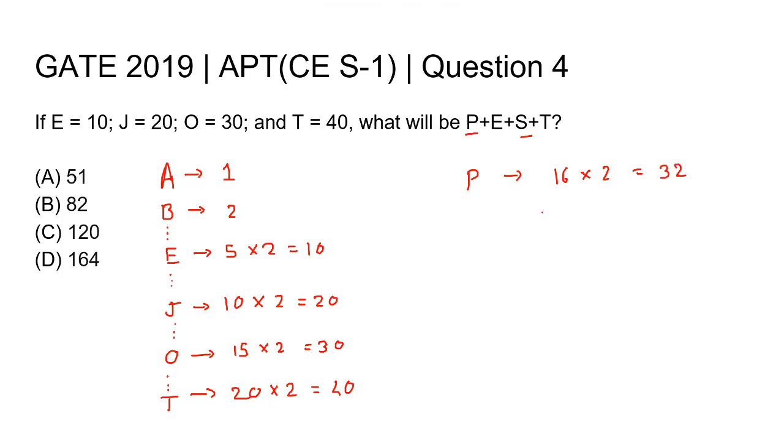Similarly, S is the nineteenth letter of the alphabet, so the number associated with it will be 19 times 2, that is 38. Now we have the values associated with P, E, S, and T, all of them.